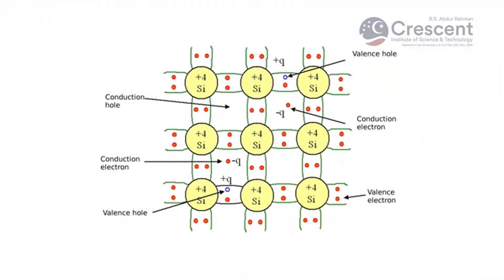Each silicon atom will have four electrons in its outermost shell. To form a strong bond, it needs at least eight electrons in the outermost shell to become more stable. There are n number of silicon atoms arranged in a fashion, so each silicon atom combines with an electron from the neighboring silicon atom and forms a pair.